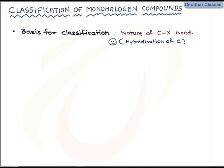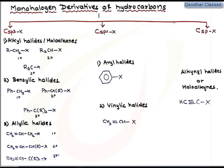Now let us discuss the classification of monohalogenated compounds of hydrocarbons. The classification is based on the nature of the C–X bond — specifically, the hybridization of the carbon to which the halogen is attached. Monohalogen derivatives of hydrocarbons are broadly classified into three categories: those containing a C(sp3)–X bond, those containing a C(sp2)–X bond, and those containing a C(sp)–X bond.